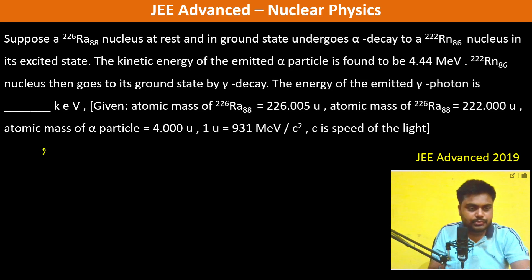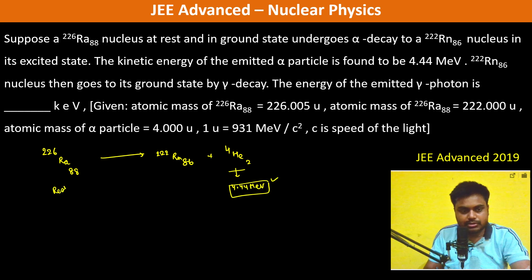Okay, so this is 226 Ra-88. This gives by fission 222 Rn-86 plus 4 He-2. Now it is mentioned that the energy of this is 4.44 mega electron volt. Now since initially this is at rest, so by the conservation of momentum, you know like...